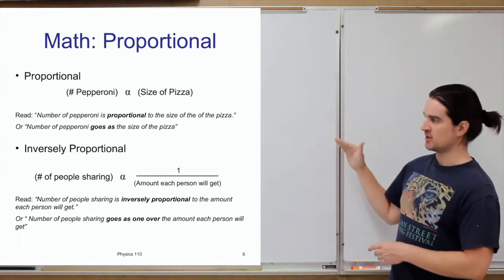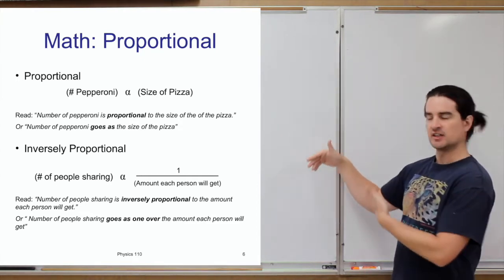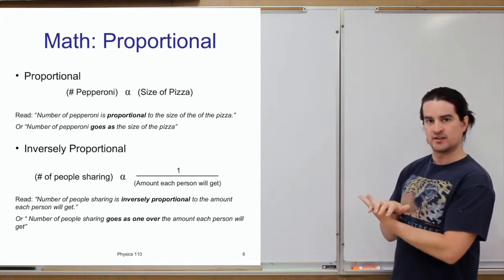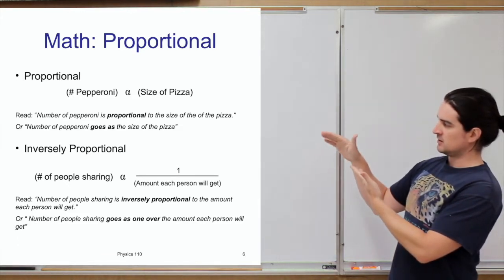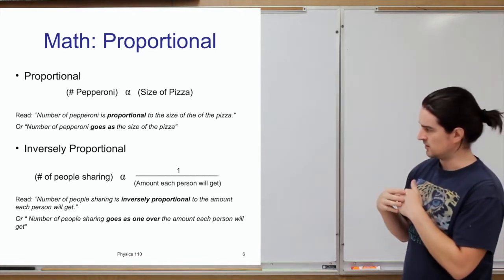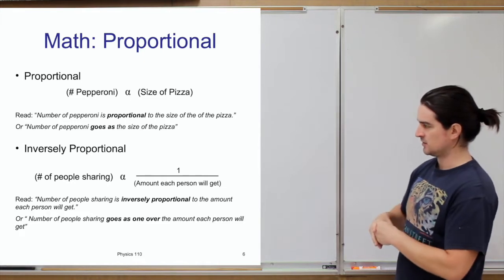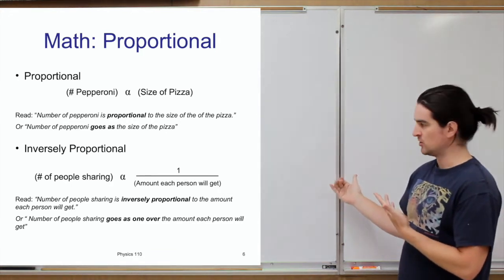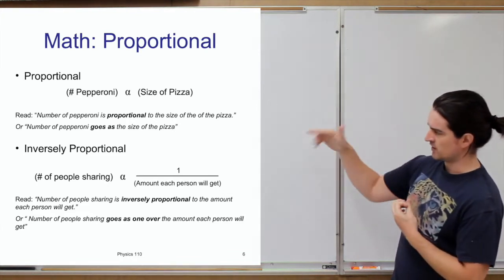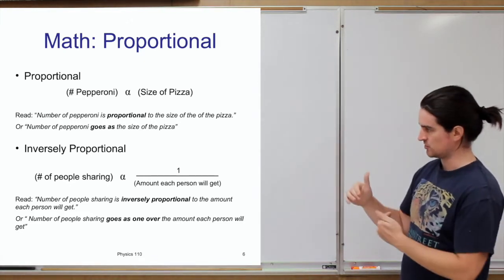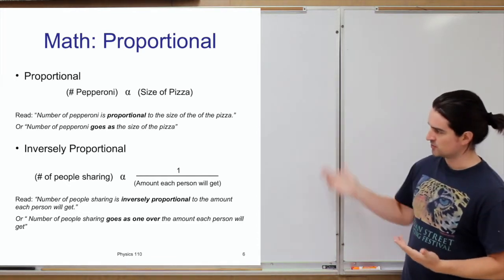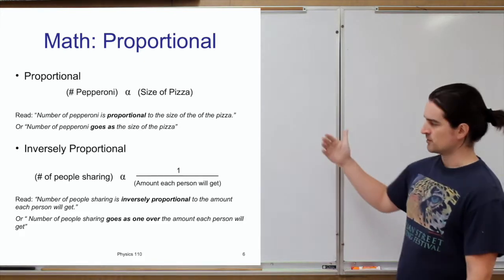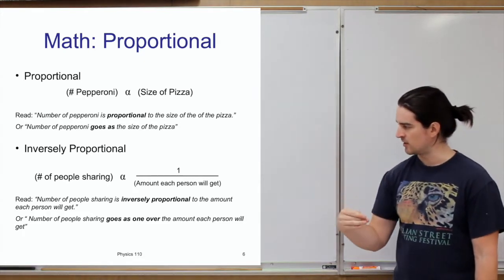To represent an inversely proportional relationship, you use almost exactly the same notation except one side is written as a fraction — one divided by that other quantity. So: number of people sharing is proportional to one divided by the amount each person will get. This shows that if the number of people goes up, the amount each person gets goes down. You'd read it as: number of people sharing the pizza is inversely proportional to the amount each person will get.